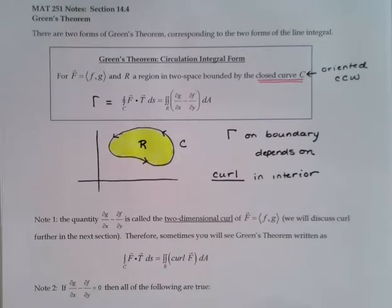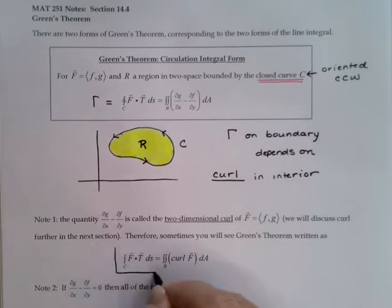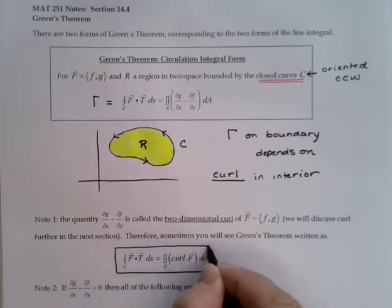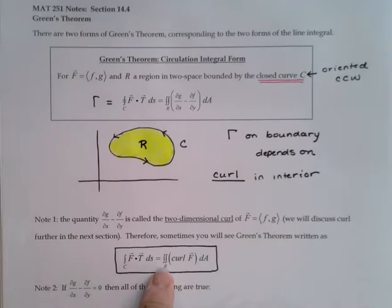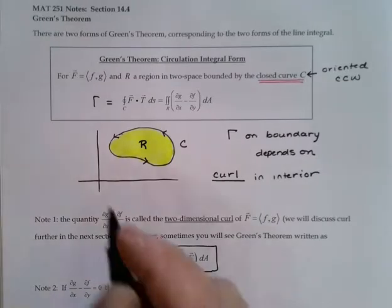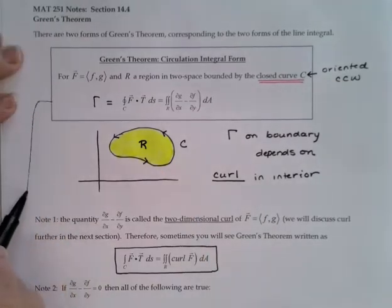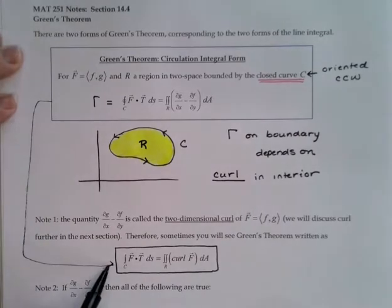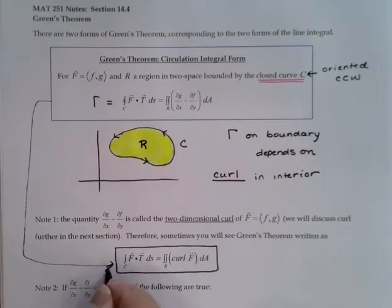For that reason, you will sometimes see Green's theorem written this way: the circulation integral equals the double integral of the curl of f, dA. It means exactly the same thing as what we had up here, just a bit of shorthand notation.